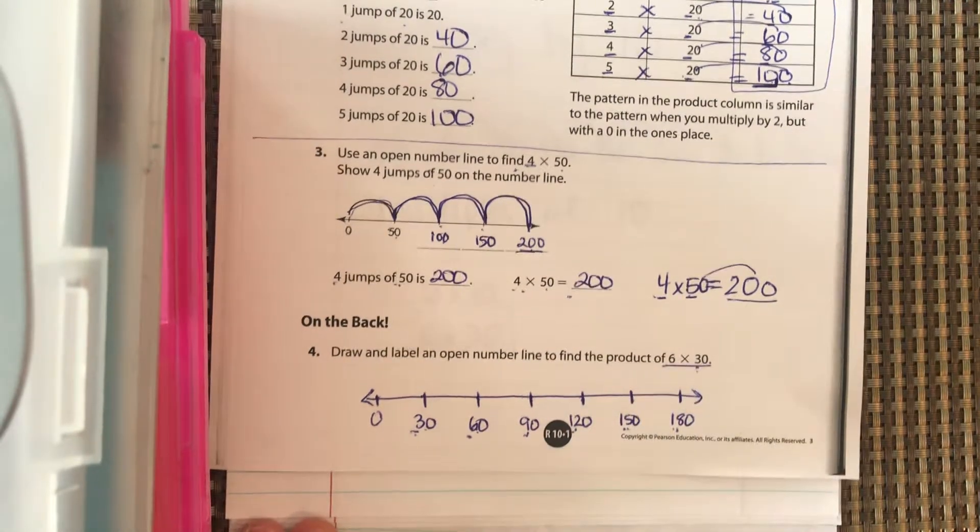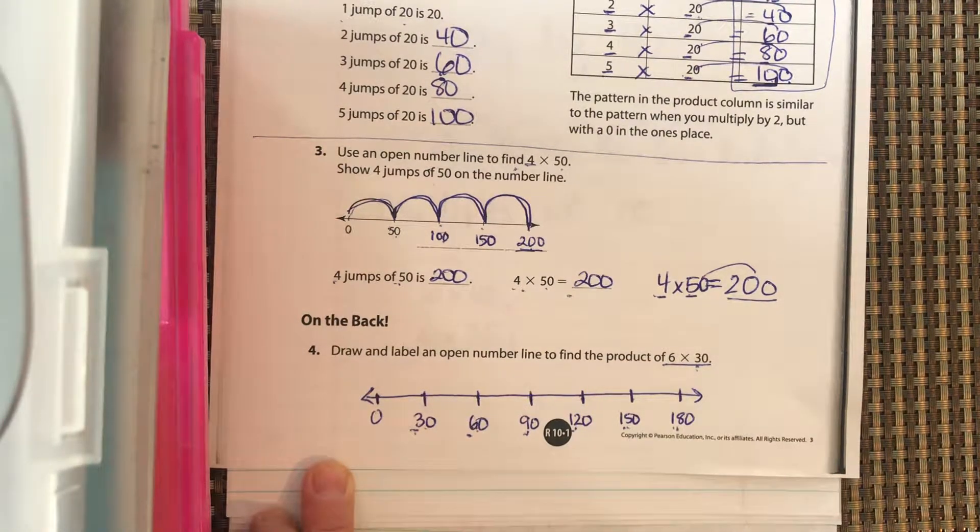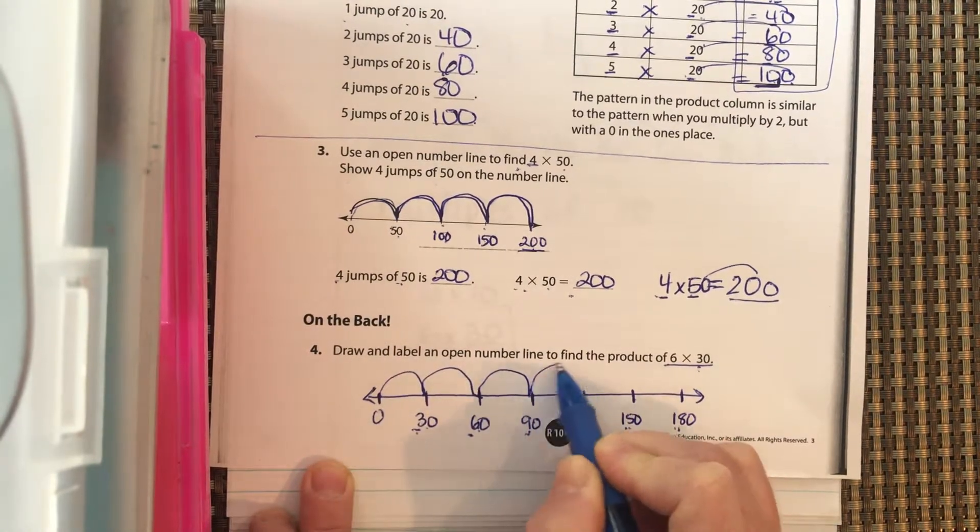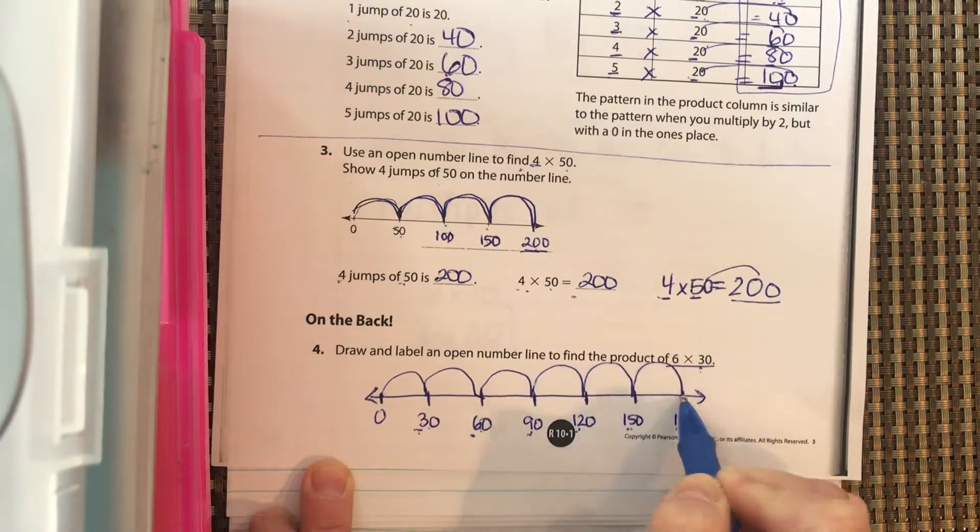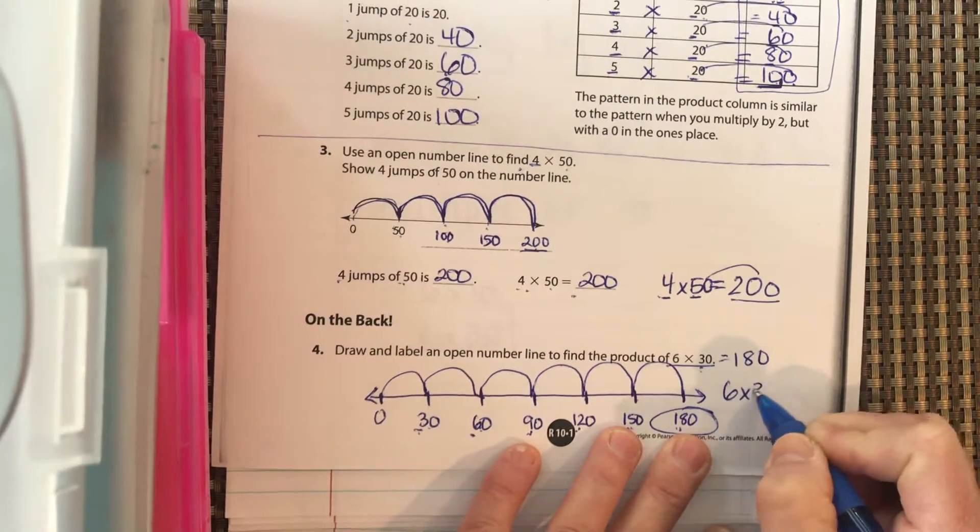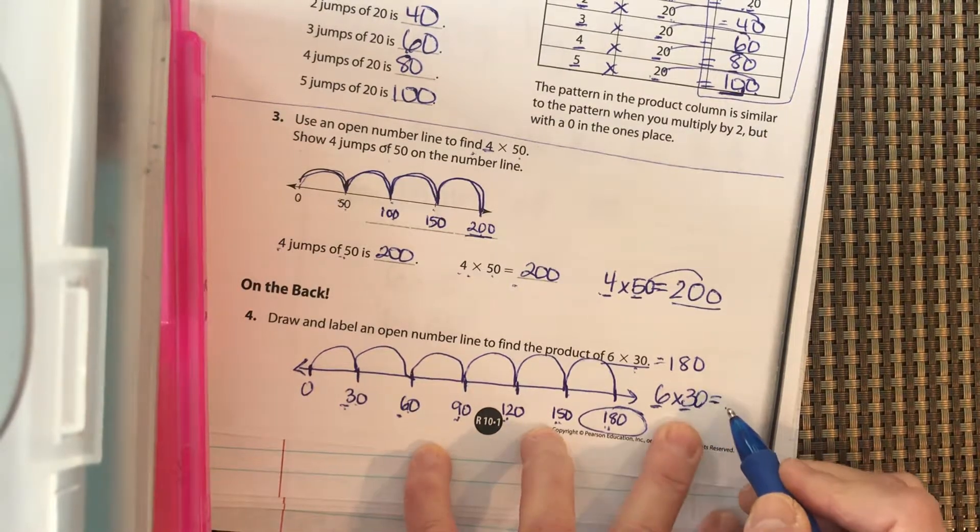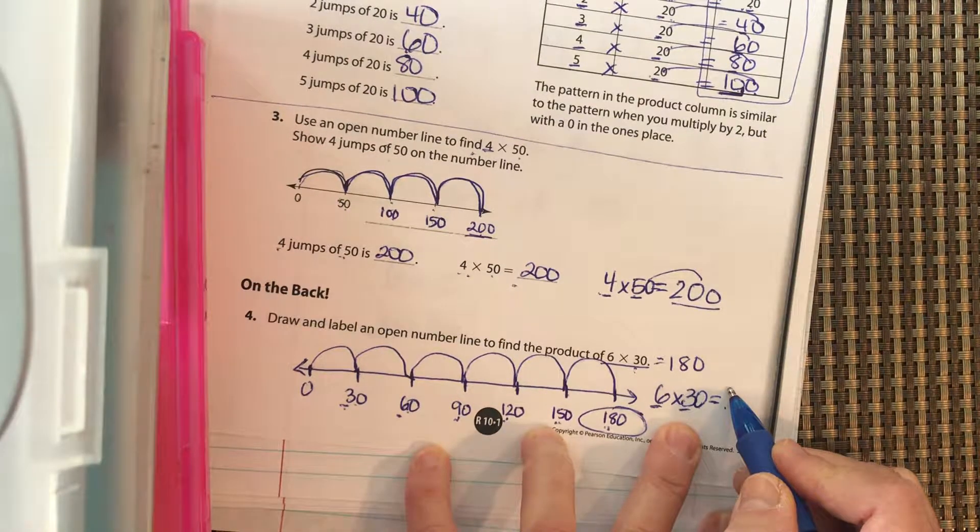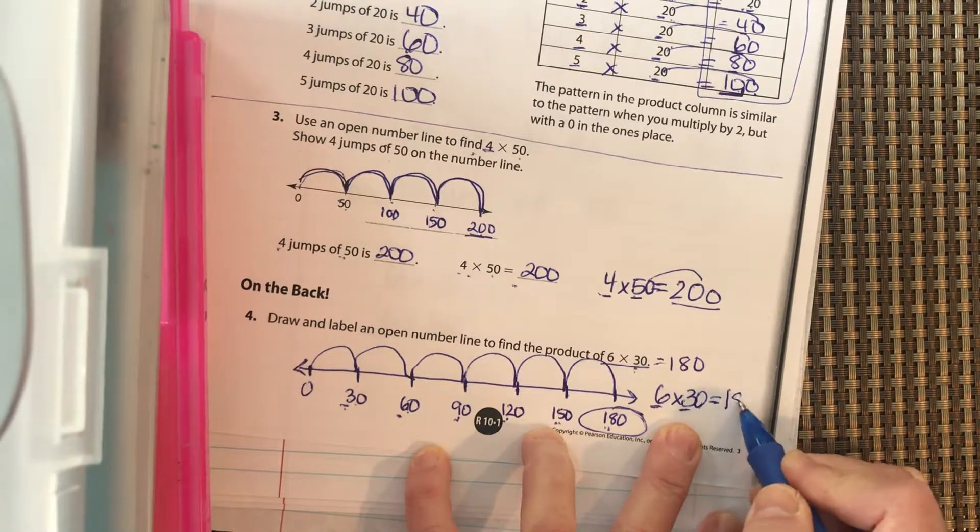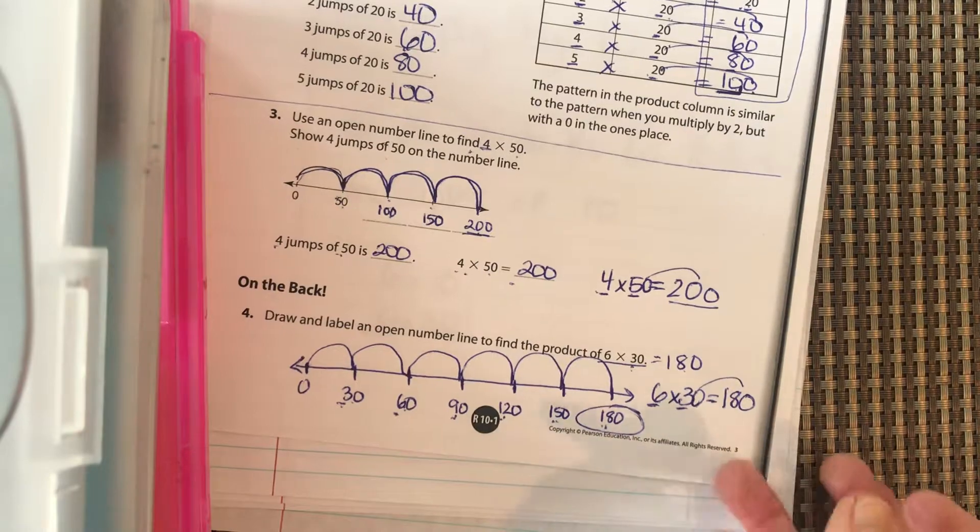Now we want to do 6 hops of 30. So start here and hop 6 times and tell me where you land. Pause it and come back. Okay. 1, 2, 3, 4, 5, 6 equals 180. And if you think about it, write this down. 6 times 30 equals. 6 times 3 equals. Write it right here. What is 6 times 3? I should get 18. You bring that 0 over. 180, which is what that is.